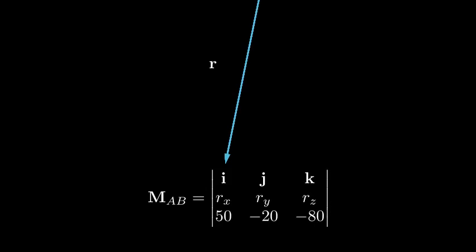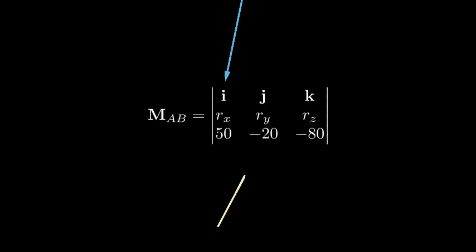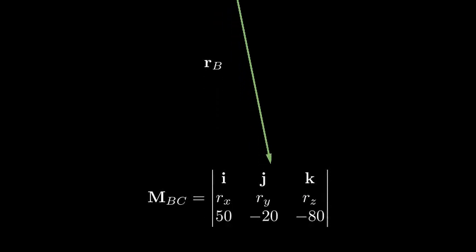Next, let's find the moment about line BC. We follow the same process, but now using a position vector from point B. This gives us a different r vector, leading to a different cross product calculation.